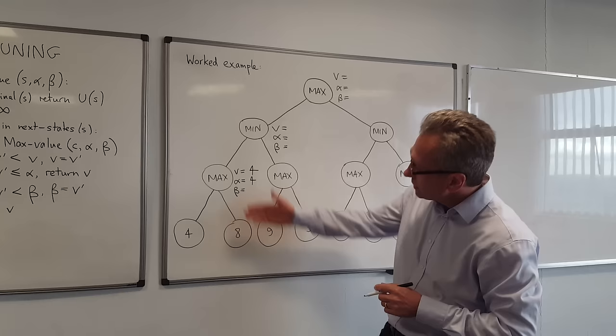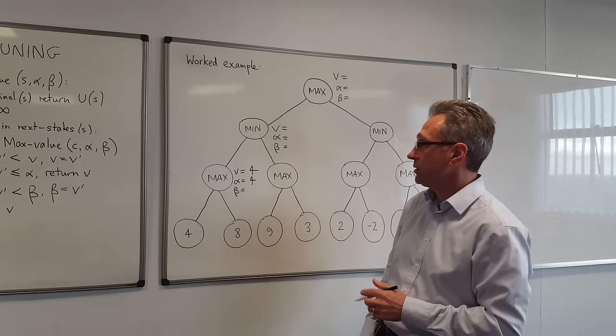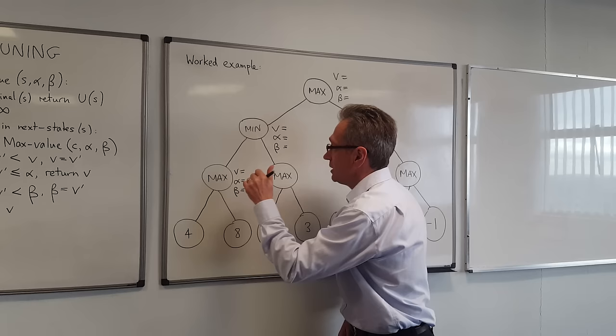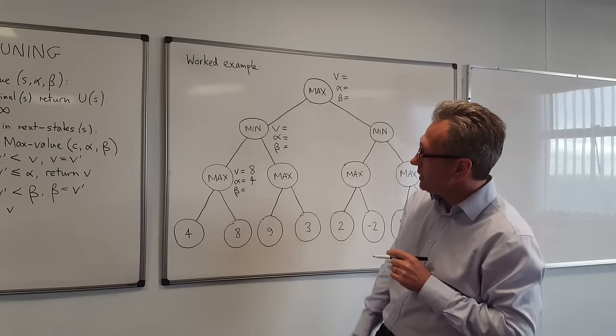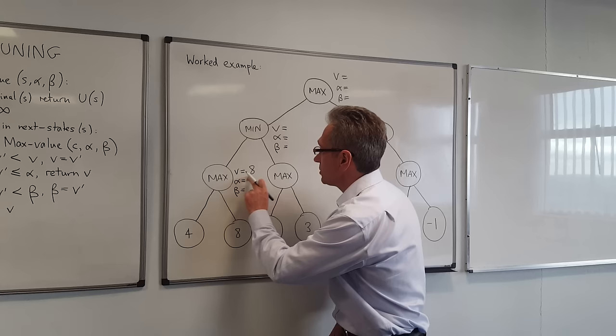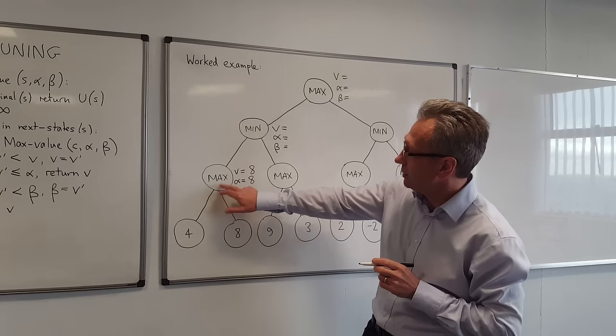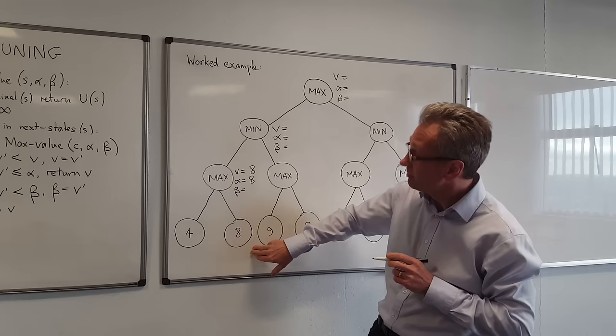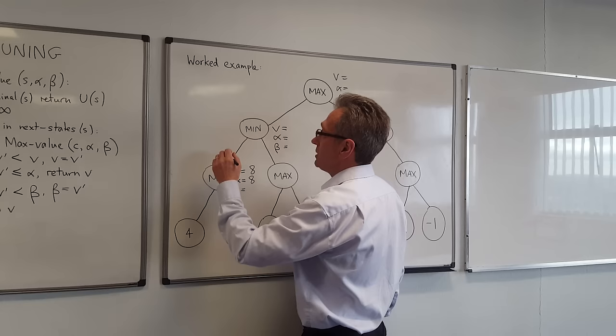Now we look at this child here, which has a value of 8. The first thing we do is update the value here, because 8 is a better reward for Max than 4 is. We look to see if we can prune based on beta, but we still haven't got a value. Finally we see if we need to update alpha — indeed we do, because we've just found a new best alternative for Max on the path leading to this node. We've now run out of children, so we pass the value 8 back up the tree to this node.